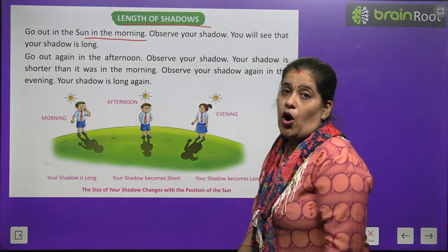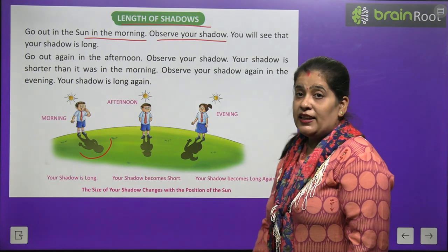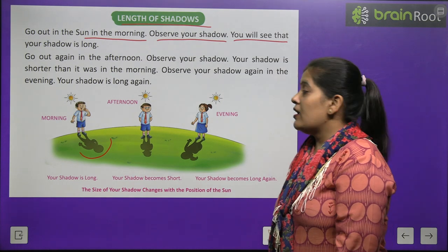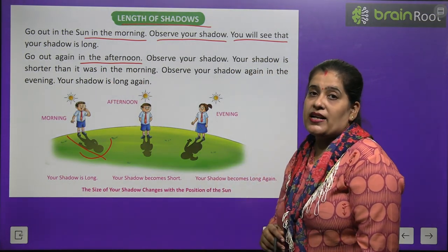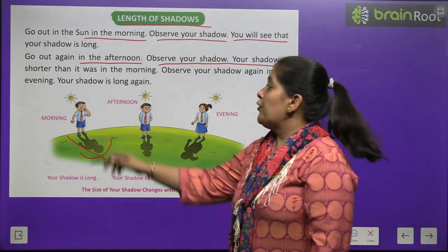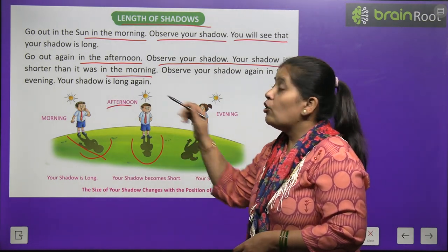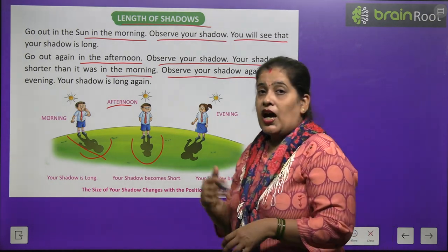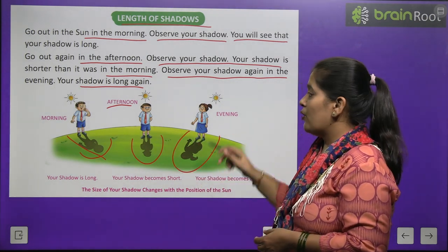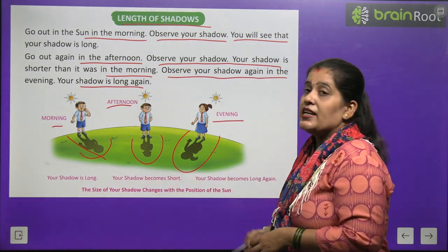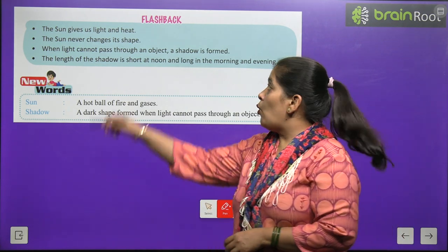Now we will learn about the length of shadows. Go out in the sun in the morning — you will see that your shadow is long. Go out again in the afternoon — your shadow is shorter than it was in the morning. Observe your shadow again in the evening — your shadow is long again. So morning aur evening ke time hamari shadow badi hoti hai, aur afternoon ke time hamari shadow chhoti hoti hai.